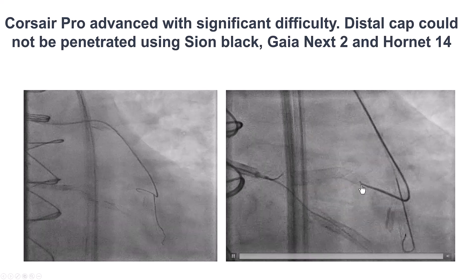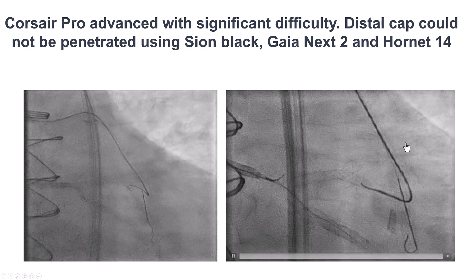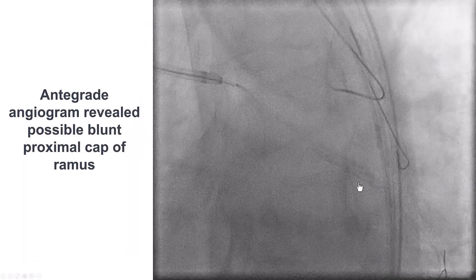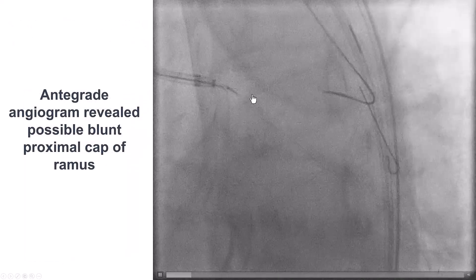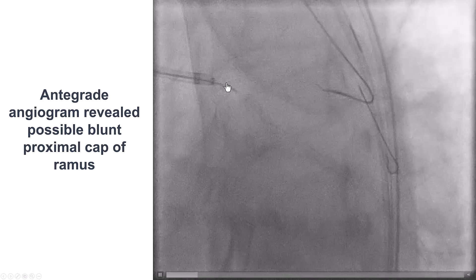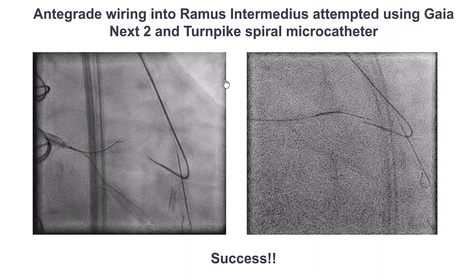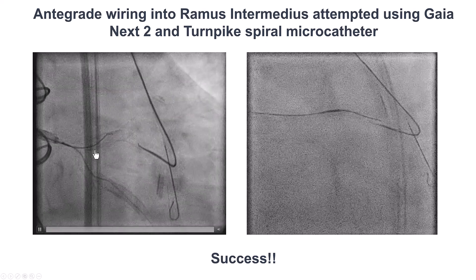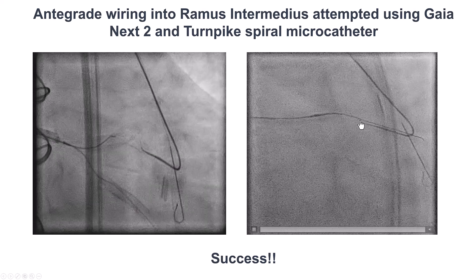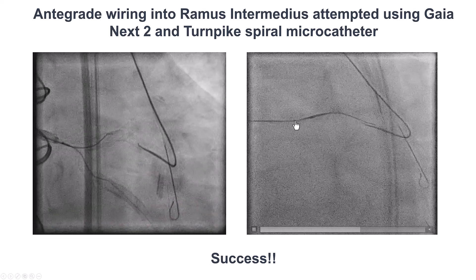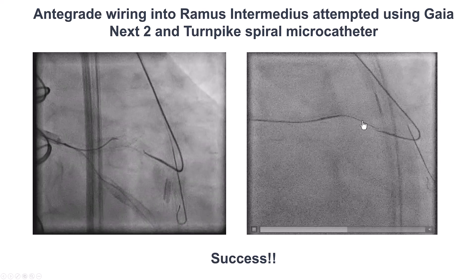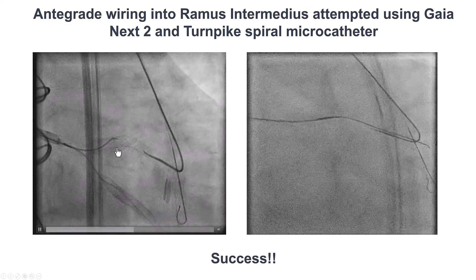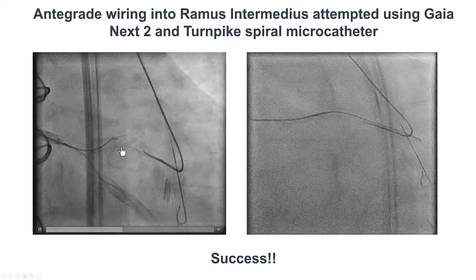We were able to advance the retrograde guidewire through the RAMUS and get a microcatheter to follow. But despite using multiple wires including Gaia NX2 and Hornet 14, we were not able to cross through the previously placed stent due to significant resistance. We did more antegrade imaging, and now thought we understood the proximal cap better. An antegrade attempt using Gaia NX2 and Enterprise allowed the guidewire to cross into the previously placed RAMUS stent, which helped clarify the ambiguity, and we were able to advance into the distal true lumen. This was an example where we started retrograde, but retrospectively, antegrade first might have been better since the stent helped resolve the proximal cap ambiguity.